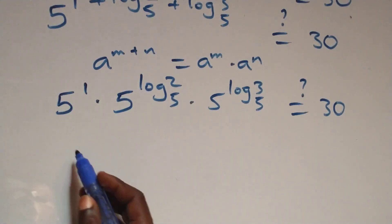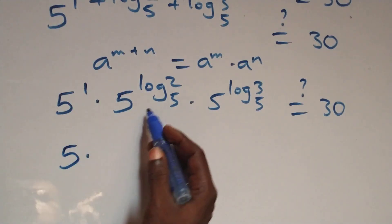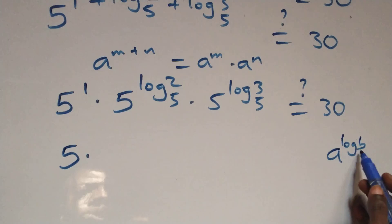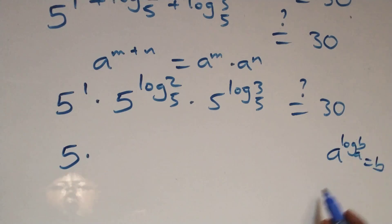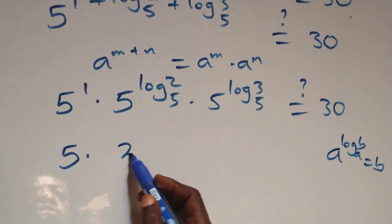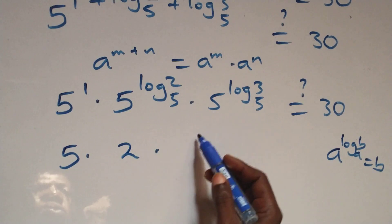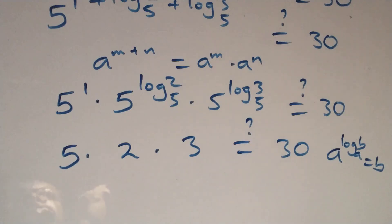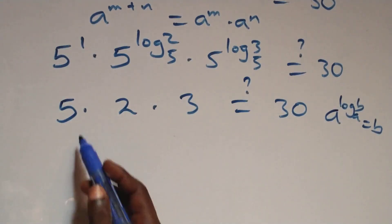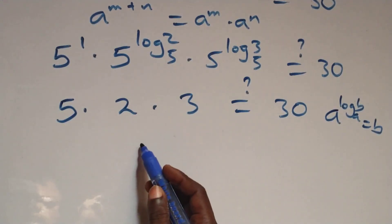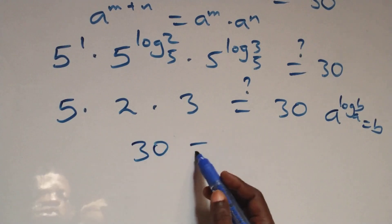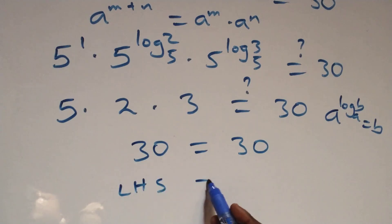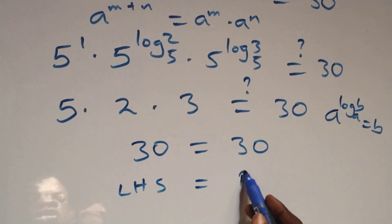This follows the rule: when we have a raised to power log_a(b), that equals b. So 5 raised to power 1 is 5, times 2, here we have 3. That is: 5 times 2 equals 10, and 10 times 3 equals 30, which equals 30 on this side. Therefore, left hand side equals the right hand side.